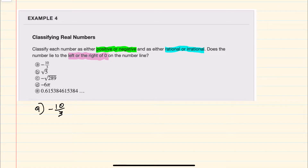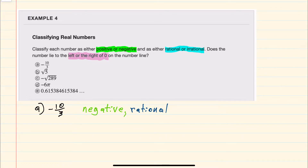For A we have negative 10 over 3. This is negative, and since we could write it as an integer over an integer — negative 10 over 3 — it is also rational. Since it's negative, it will be to the left of 0 on the number line.